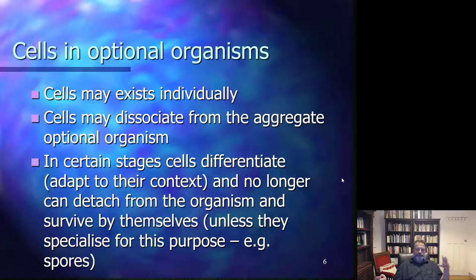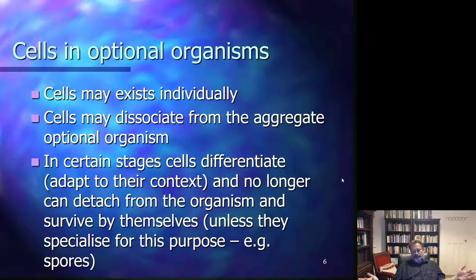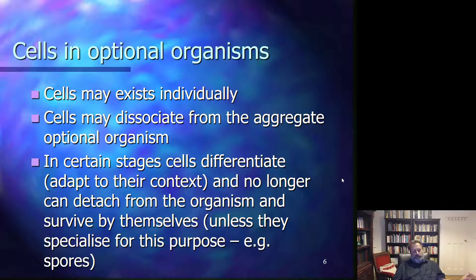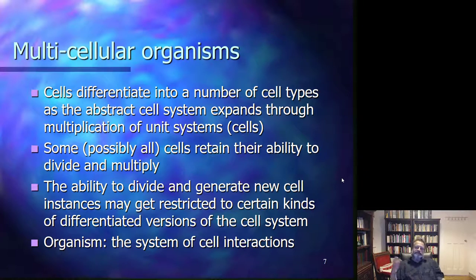The cells in these optional organisms can exist individually in sufficiently supportive environments and can also dissociate from the aggregate organism and then exist as individual cells. However, in certain stages the cells may differentiate to an extent where they can no longer detach from the organism. For example, the stalk cells in the case of slime molds can no longer dissociate — only those specialized for this purpose, like spores, can dissociate, not the stalk cells. So in those cases, the instances of the unit systems can form optional organisms but do not necessarily have to exist in the context of these organisms.